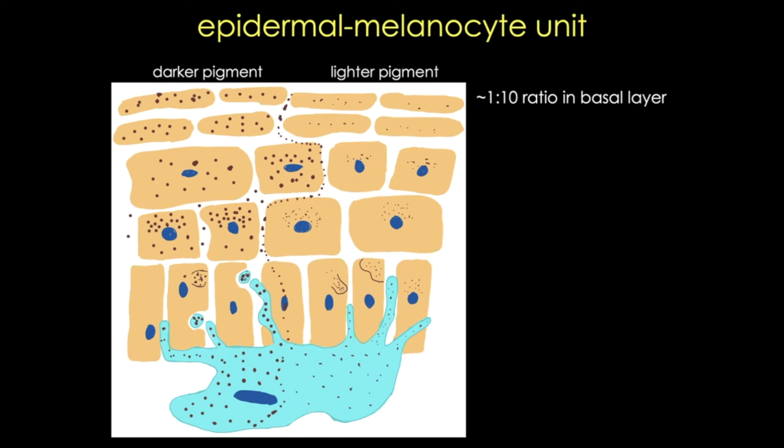The keratinocytes actually endocytose the melanin. Once transferred, the melanin granules accumulate above the nucleus as we've seen previously, and then they get removed with the shed epidermal cells—so as our skin sheds epidermal cells, the melanin pigment goes along with it. Importantly, there are no desmosomes between melanocytes and keratinocytes, which makes sense since they're not really considered part of the epithelial sheet.